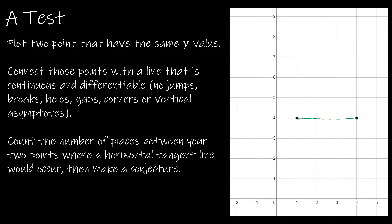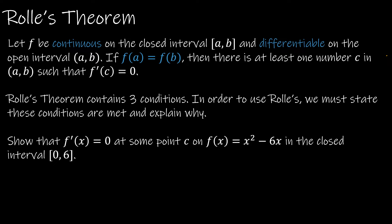In one case, I have a horizontal tangent line at all of the points between (1,4) and (4,4). If I get a little silly, I might find 1 or 2 such points. Let's change colors — now I have 1 point. Make a conjecture, meaning make an educated guess, about how many horizontal tangent lines there would have to be between these two points. This brings us to Rolle's theorem.